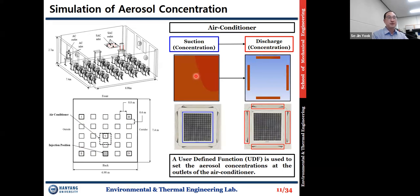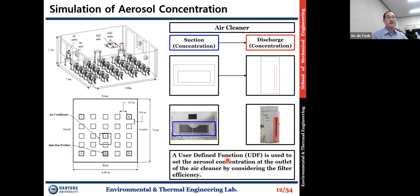A user-defined function is used to set the aerosol concentrations at the outlets of the air conditioner. The aerosol concentration at the suction surface is averaged, and that average value is used as the input condition for the outlets. In case of the air cleaner, the aerosol concentration measured at the inlet is multiplied by the filtration efficiency, and that value is used as the input concentration at the outlet of the air cleaner.